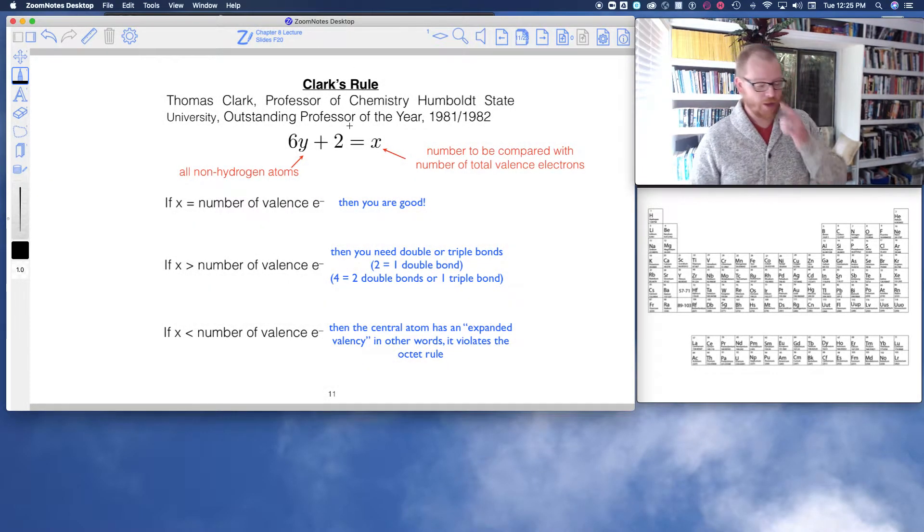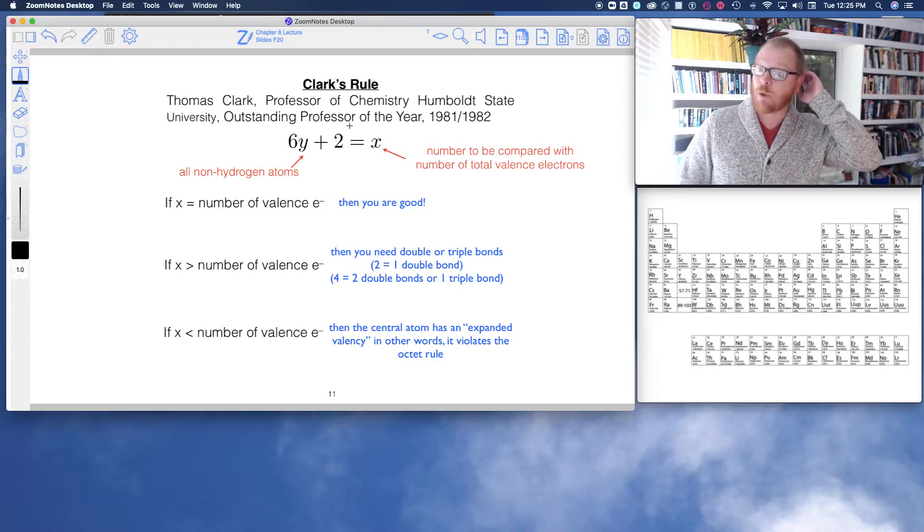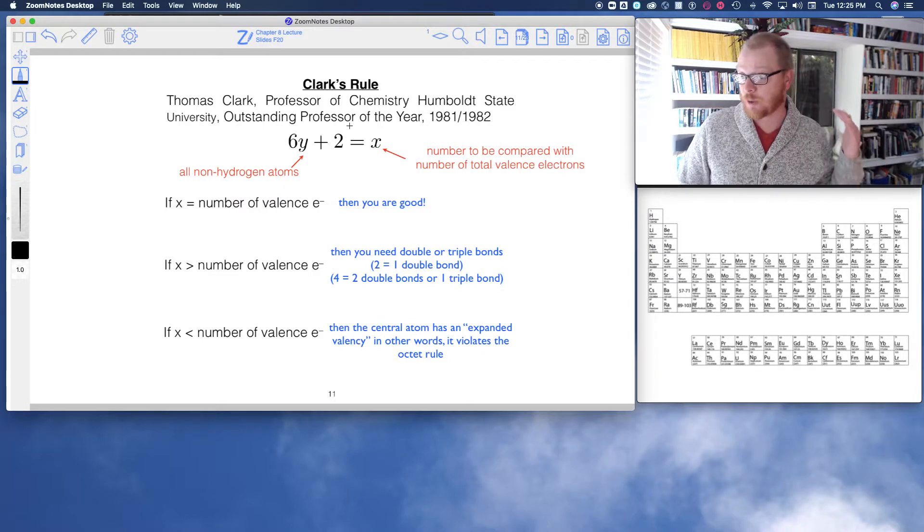So now let's get into Clark's rule. Clark's rule is going to give us the rule for when we have multiple bonds. So that means double bonds or even triple bonds.